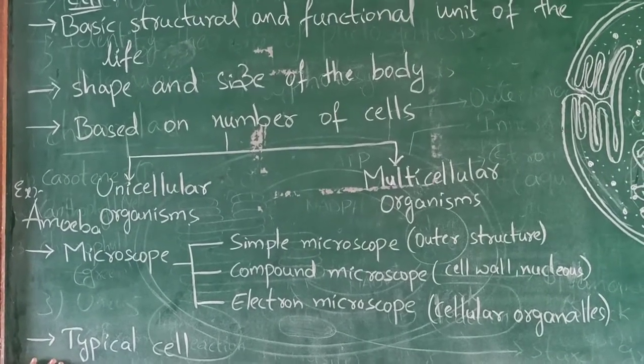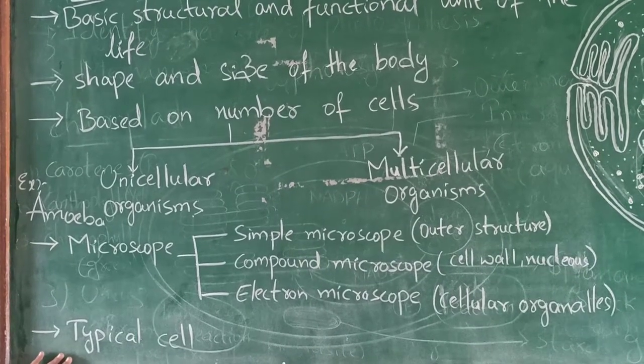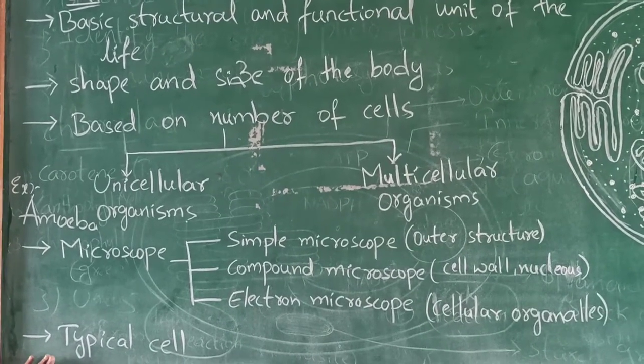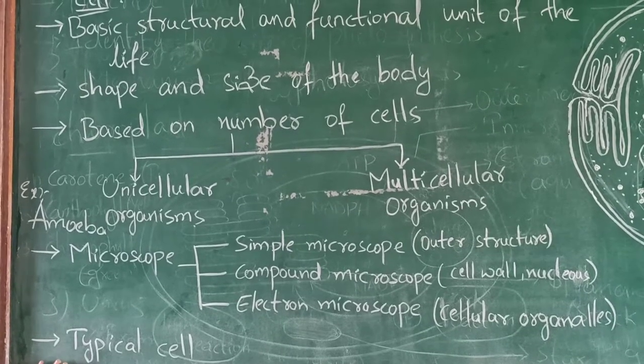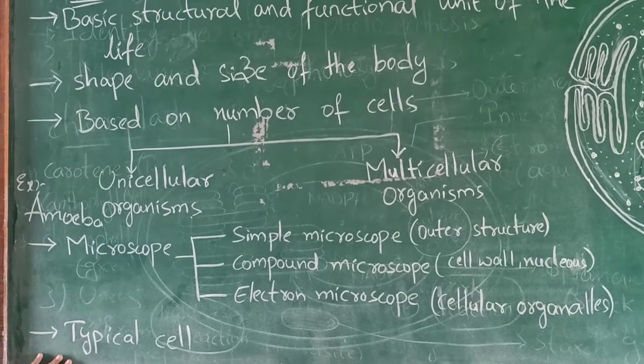Typical cell. What is typical cell? Which cell is having total number of cell organelles is called a typical cell. If animal cell is having total number of cell organelles, that is a typical animal cell.